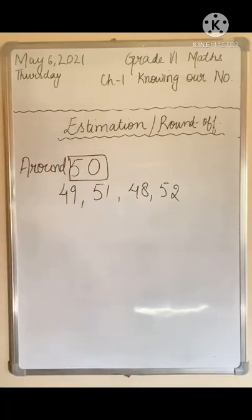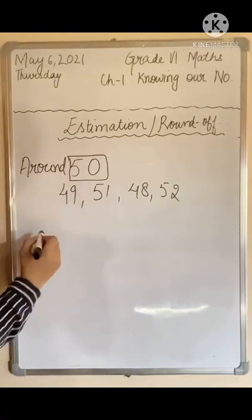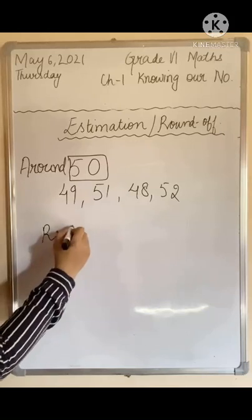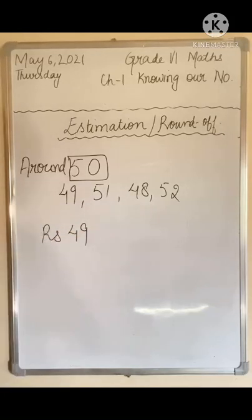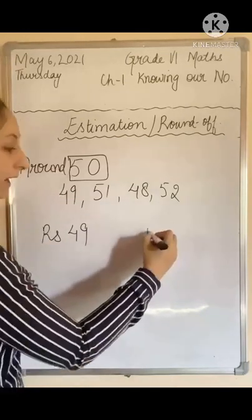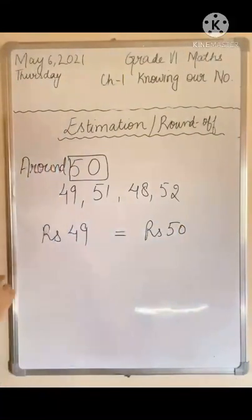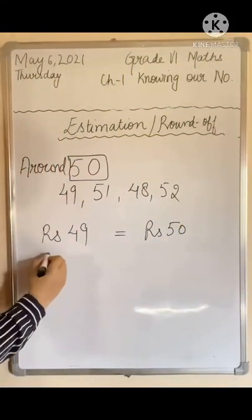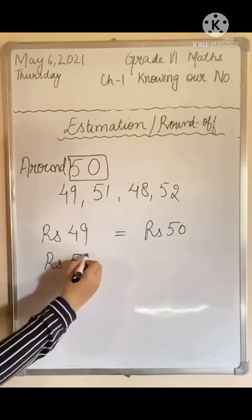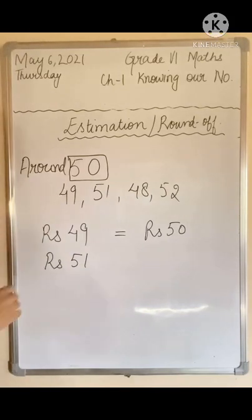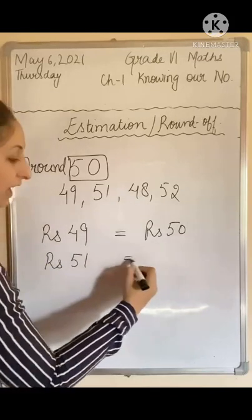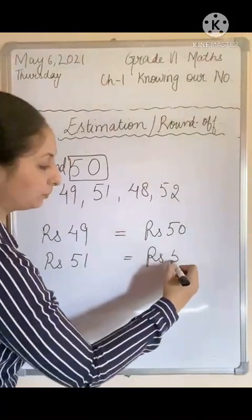Let's take another example. Suppose you went to a market and bought something. The total price for the product was Rs. 49. Since the shopkeeper didn't have change of Rs. 1, you paid him Rs. 50.